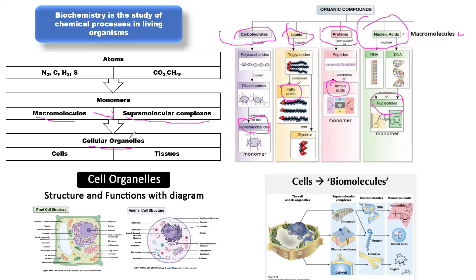These organelles of the cell rearrange themselves to produce a cell. A cell also produces a tissue, different tissues form organs, organs form systems, and then systems form complete living organisms.